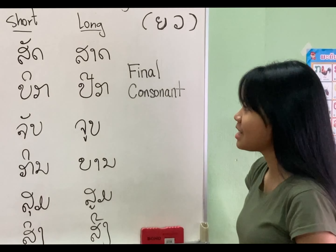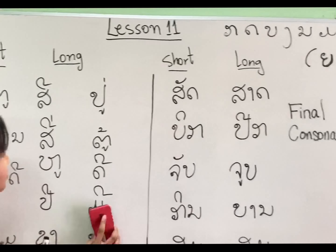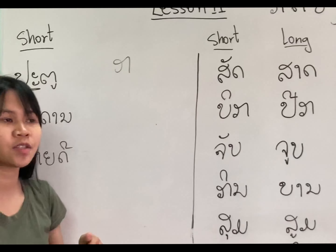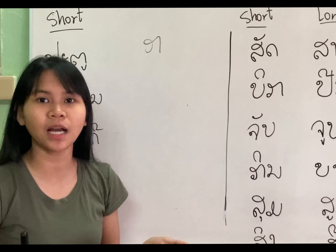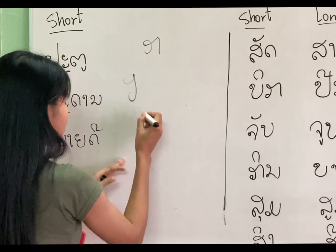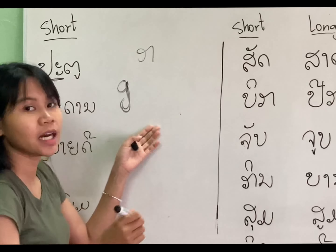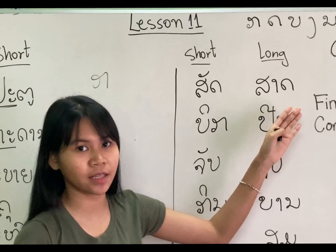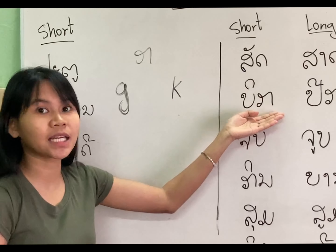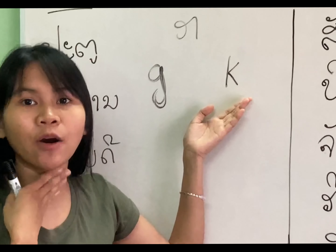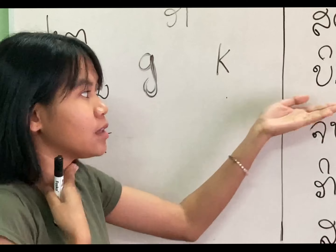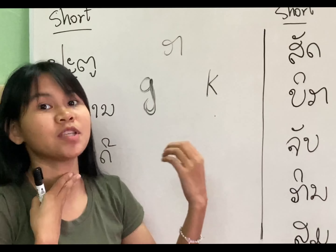So for the next one, the final consonant 'Go'. When its job is the initial consonant, the sound is G. But when its job is the final consonant, it becomes K. But it doesn't mean a fully released K sound. You can start to make a K sound, but you stop there - you stop the voice and the air. It's going to be K, but you stop the air. You stop the air.